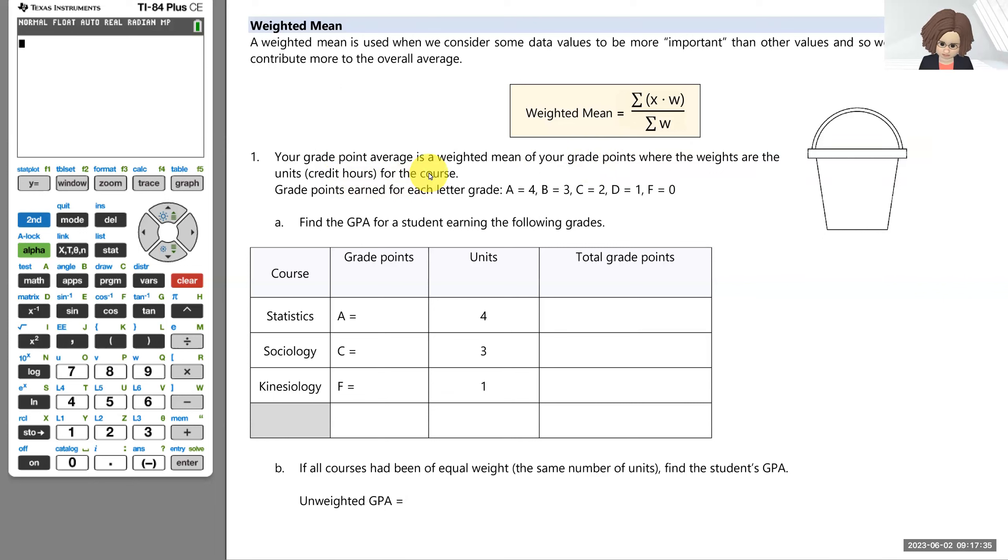When you take a class and earn a letter grade, you're earning points for it. A's are worth four points, B's are worth three points, C's are worth two points, D's are worth one point, and an F in a class earns you zero points. But the letter grades are not all necessarily equal in terms of their contribution to your overall GPA because we weight the points based on how many units a course is worth. So let's take a look at this example. I have my student here that took statistics and earned an A, yippee for that. So that gives the student four points. So A's are four. So X will represent our variable, in this case the grade earned.